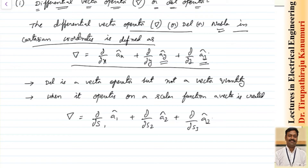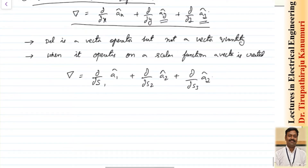In a generalized way, in the curvilinear coordinate system as we have discussed in our previous class, the different coordinates will be a1, a2, and a3, and the differentiations we take are by s1, s2, and s3. That will be ∂/∂s1 in the direction of a1, ∂/∂s2 in the direction of a2, and ∂/∂s3 in the direction of a3. If you are not getting how these come, I request you to please refer to my previous lecture on curvilinear coordinate systems before checking this one.